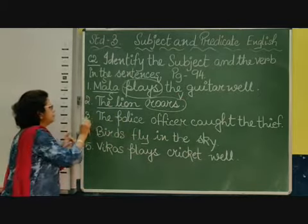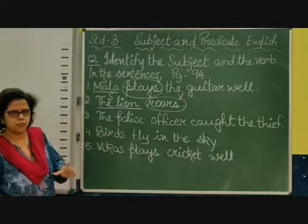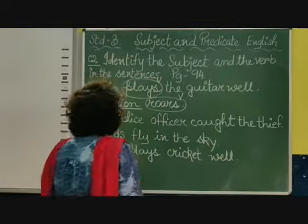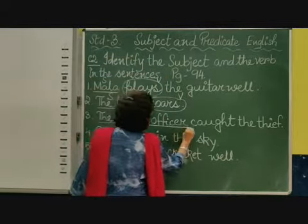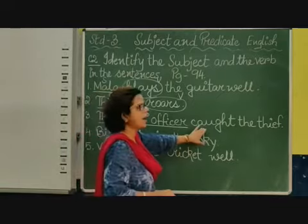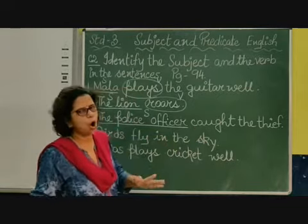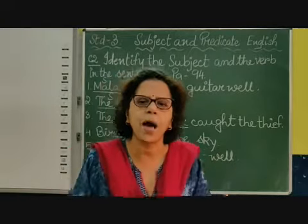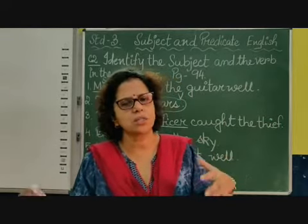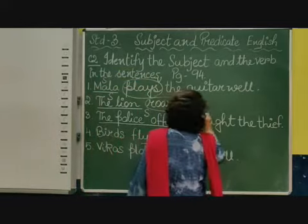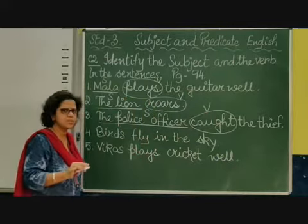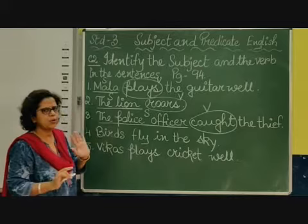Number three: The police officer caught the thief. About whom are we talking? We are talking about the police officer, so the police officer is the subject. I underline it and write S. Caught the thief is the predicate, and as we know the predicate starts with a verb. Caught — C-A-U-G-H-T — is the past tense of catch. So it is the verb. I write V here. But here we are only asked to find the verb, not the predicate.